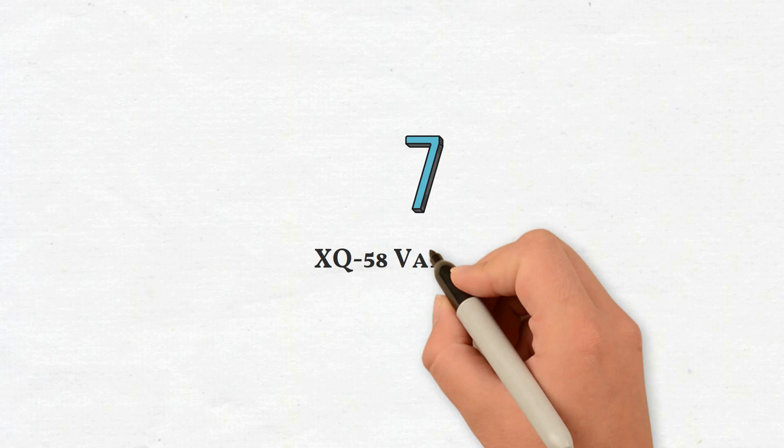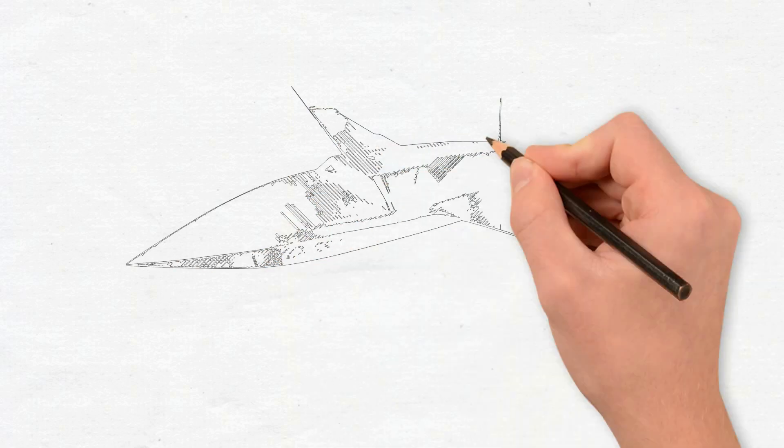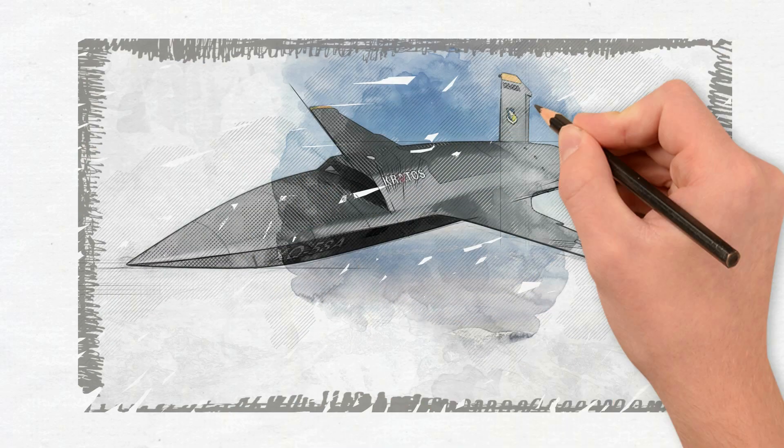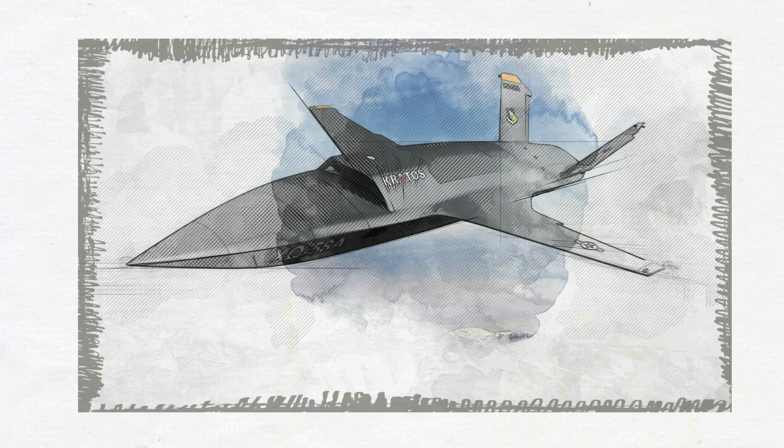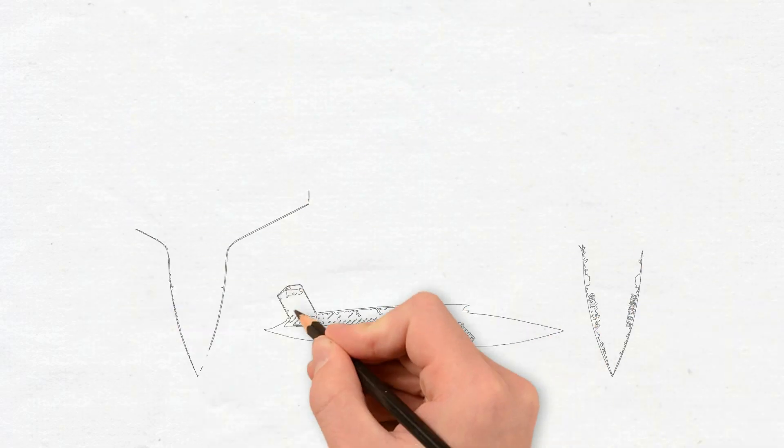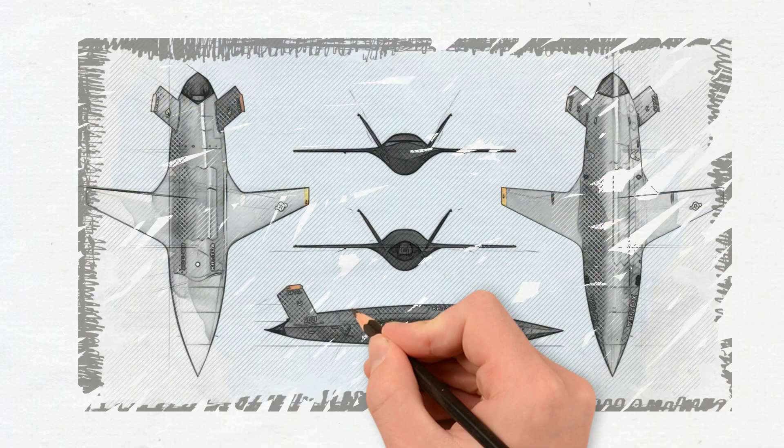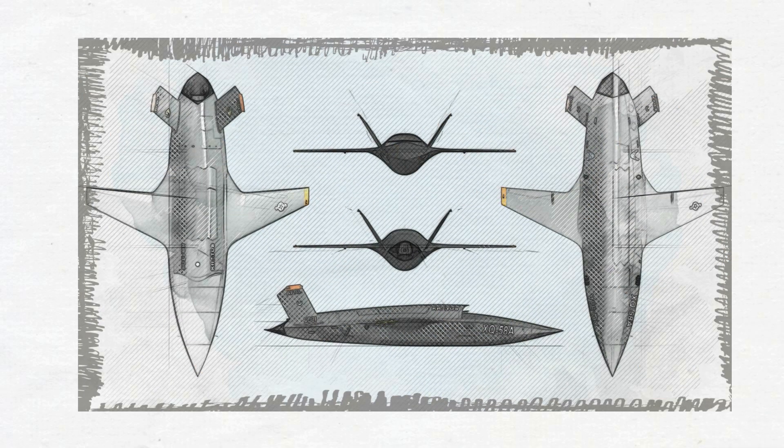For the United States Air Force's low-cost attritable strike demonstrator program, which is a part of the USAF Research Laboratory's low-cost attritable aircraft technology project portfolio, Kratos Defense and Security Solutions developed and produced the stealthy Kratos XQ-58 Valkyrie UCAV. XQ-222 was the initial name of this drone.